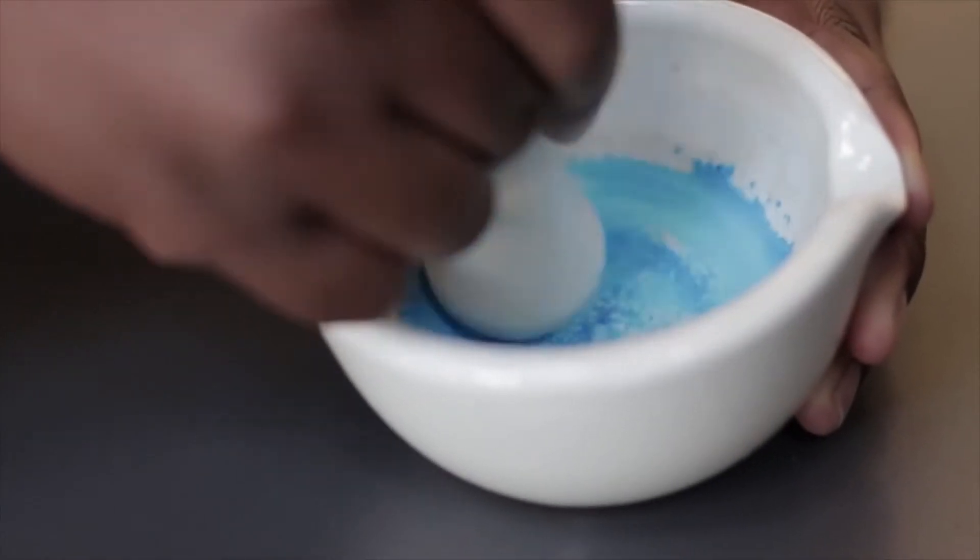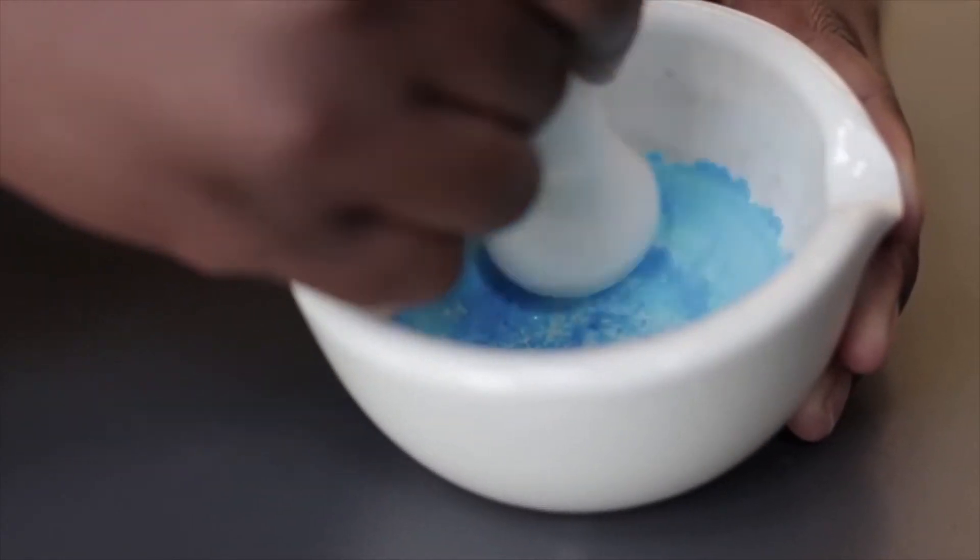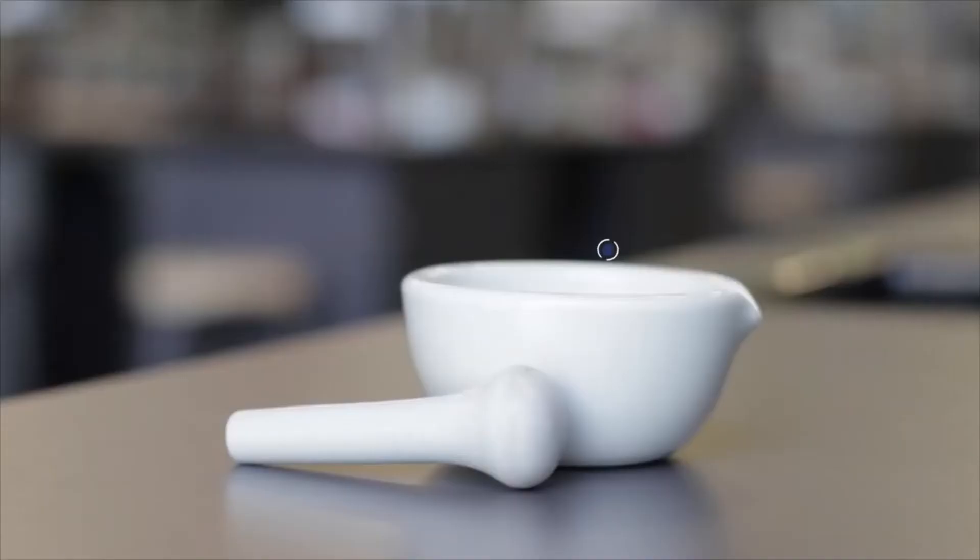A pestle and mortar is used for grinding and crushing samples into a powder. The mortar is the bowl. The pestle is the object that is used for grinding and crushing samples.